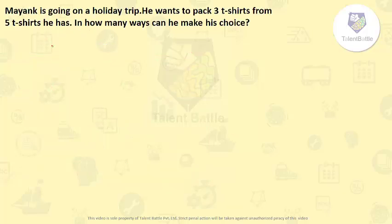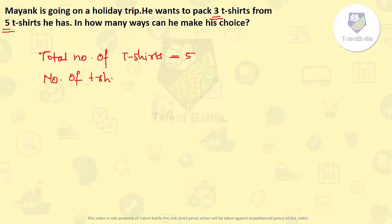Mayank is going on a holiday trip. He wants to pack 3 t-shirts from 5 t-shirts he has. In how many ways can he make his choice? So here they have told that Mayank is having total 5 t-shirts and he has to choose 3 t-shirts from them. So here let me write total number of t-shirts is equal to 5 and number of t-shirts he has to choose is 3.